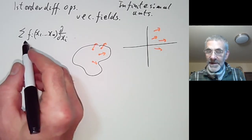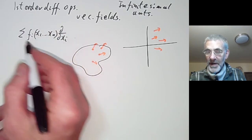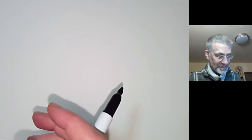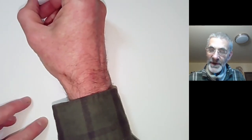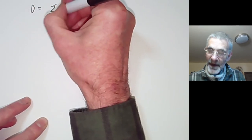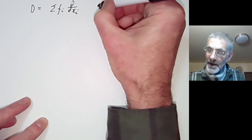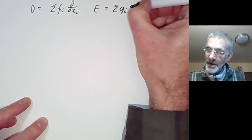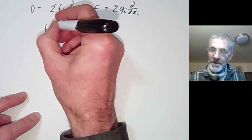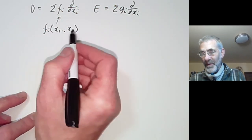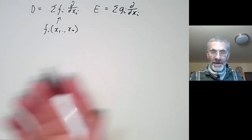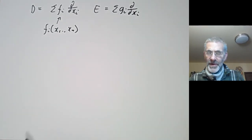What we want to do now is discuss how to put an algebraic structure on first-order differential operators, which will later turn out to be essentially the Lie bracket. Suppose we've got two first-order differential operators: D is a sum of f_i times d/dx_i and E is a sum of g_i times d/dx_i, where f_i and g_i are functions of x_1 up to x_n. We want to find some algebraic operation we can do with them.